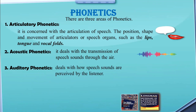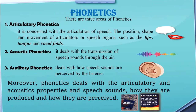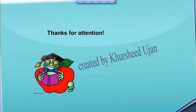Number three is auditory phonetics. It deals with how speech sounds are perceived by the listener — the science of how sounds are heard by individuals. Moreover, phonetics covers the articulatory, acoustic, and auditory properties of speech sounds: how they are produced and how they are perceived. This concludes the basics and branches of phonetics. Thanks for your attention — thank you very much.